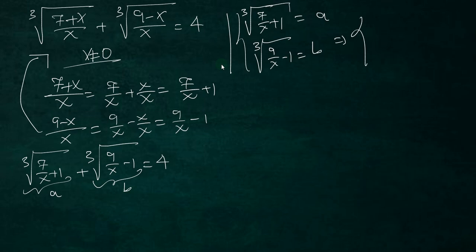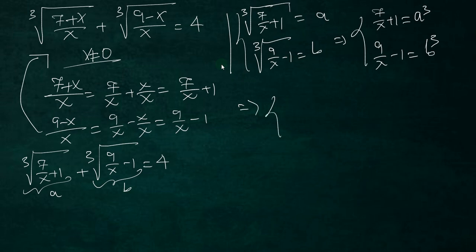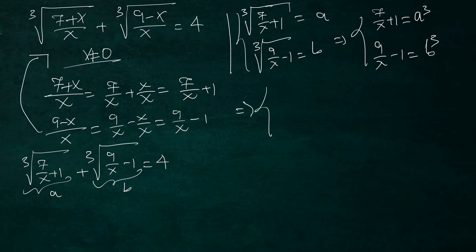So we have that 7/x + 1 = a³ and 9/x - 1 = b³. This is where the trick lies. Rearranging, we get 7/x = a³ - 1 and 9/x = b³ + 1, since we send the ±1 to the right-hand side.